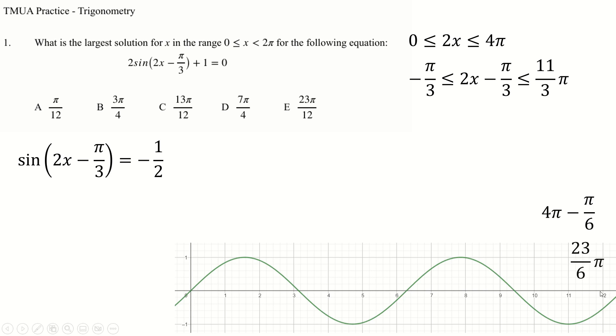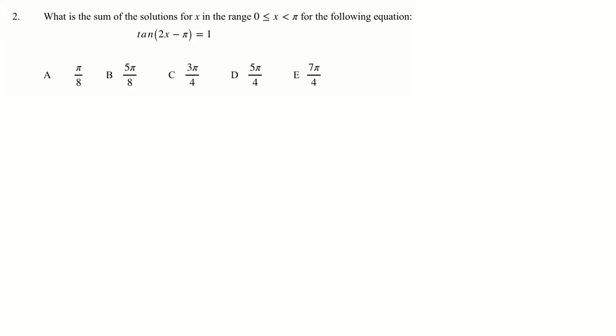So sine equals minus 1 half at π over 6 beyond π, or π over 6 back from 4π. The problem is π over 6 back from 4π takes you there, and if you double this to get 22 over 6, this one is just out of range. So instead, we need to go 3π plus π over 6 to find our biggest valid solution, which will be 7π over 4.